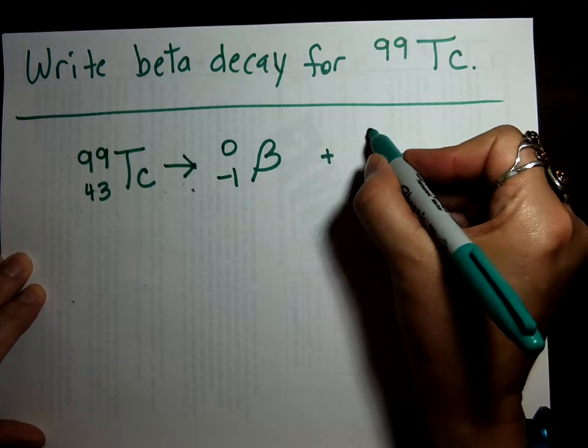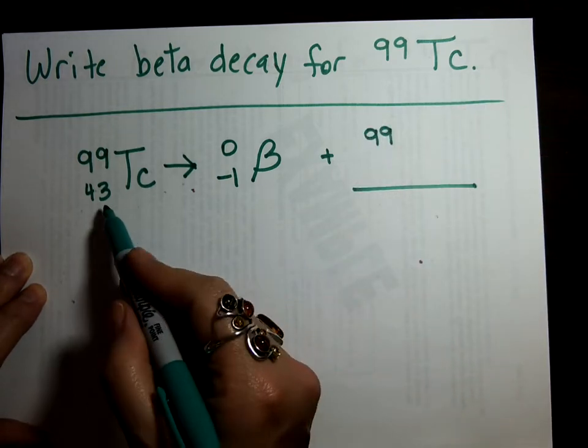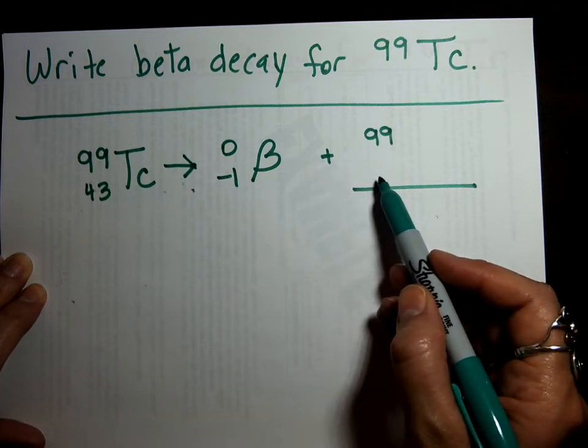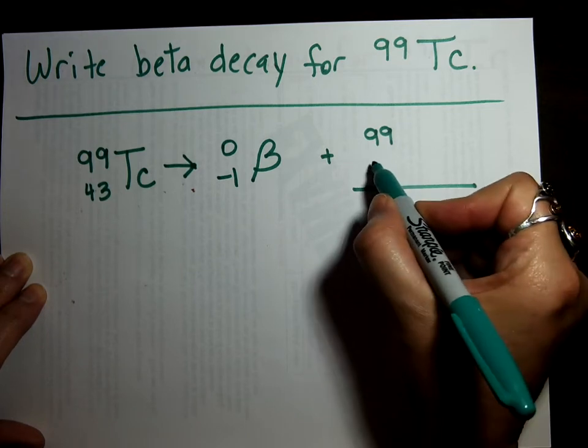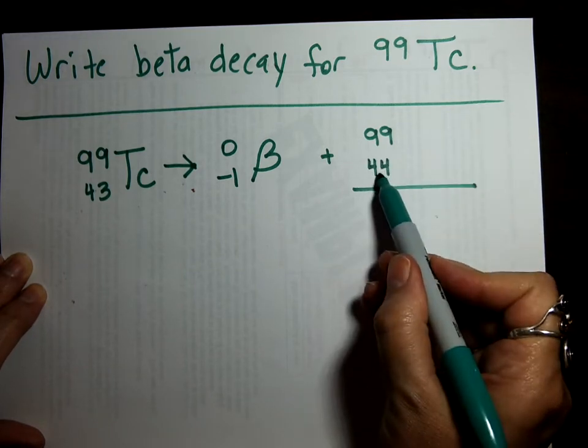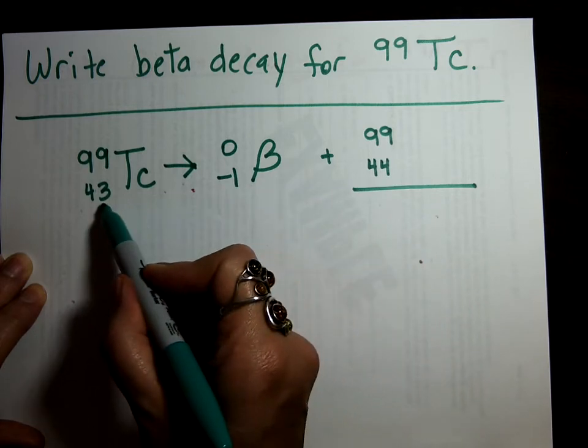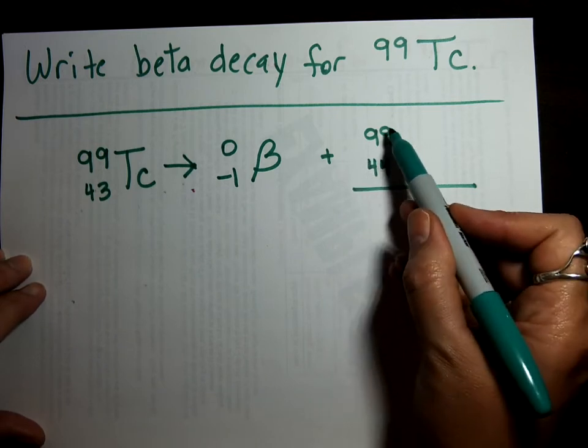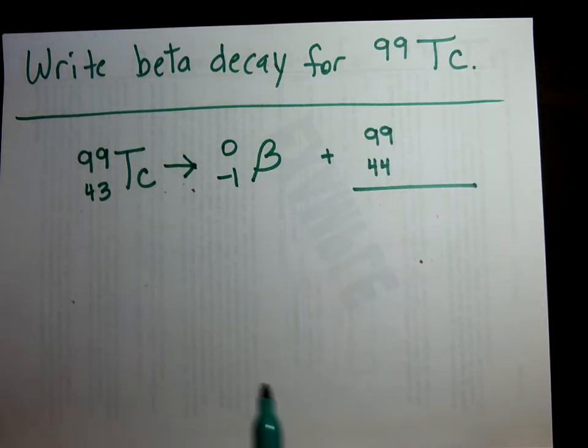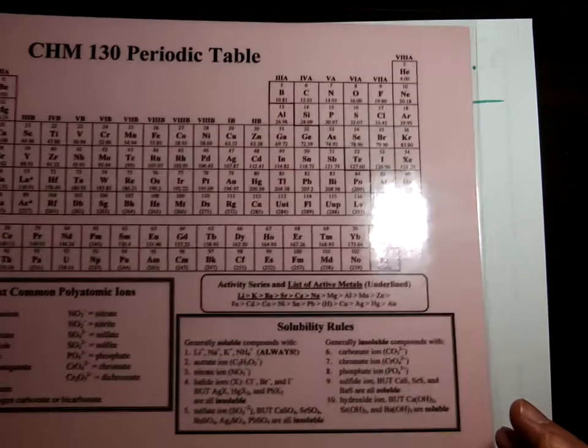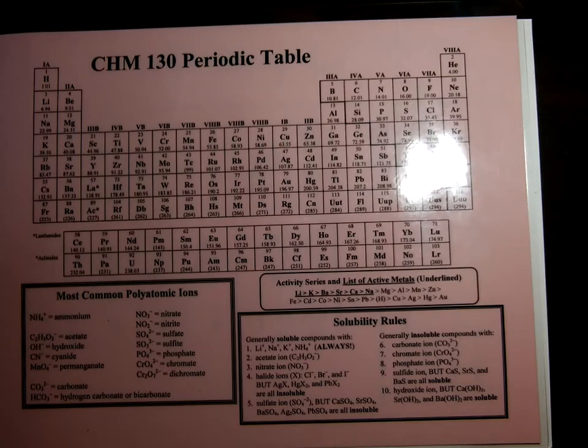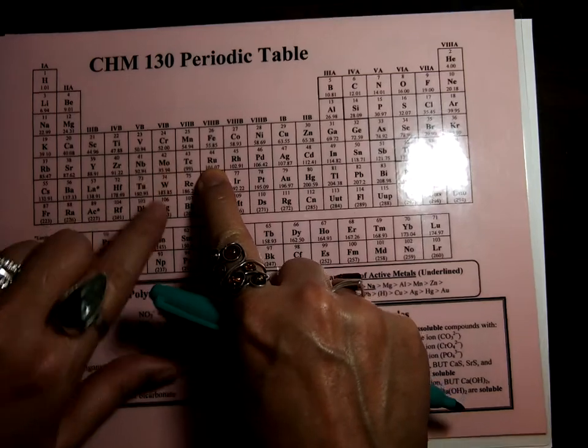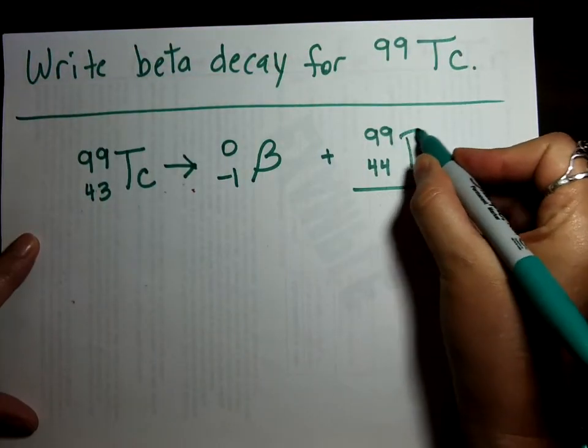Well, it's 99 still. Okay, here's the tricky one. 43 equals a negative 1 plus what? I hope you said 44. 44 minus 1 is 43. So our daughter atom has 44 protons. The mass is 99. So we need to figure out who has 44 protons. So let's go to the table and look. Here's 44. It's R-U. So R-U is the symbol for the daughter atom.